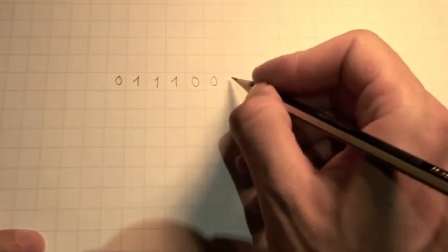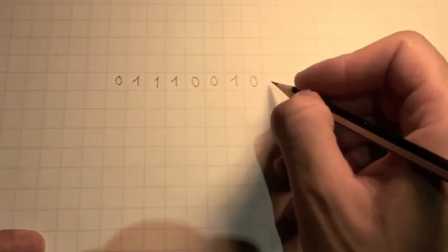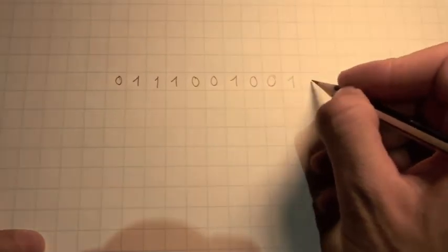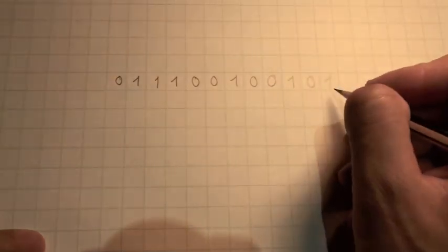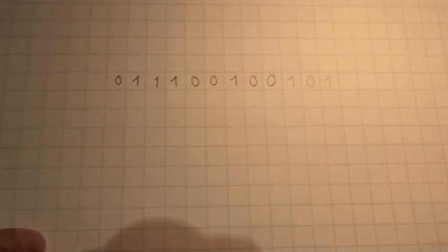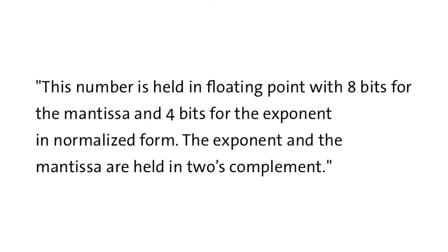To start off, we will interpret what the number means in normal numbers in base 10. The question states that this is a floating point number with 8 bits for the mantissa and 4 bits for the exponent. It's in normalized form. The exponent and the mantissa are held in 2's complement.